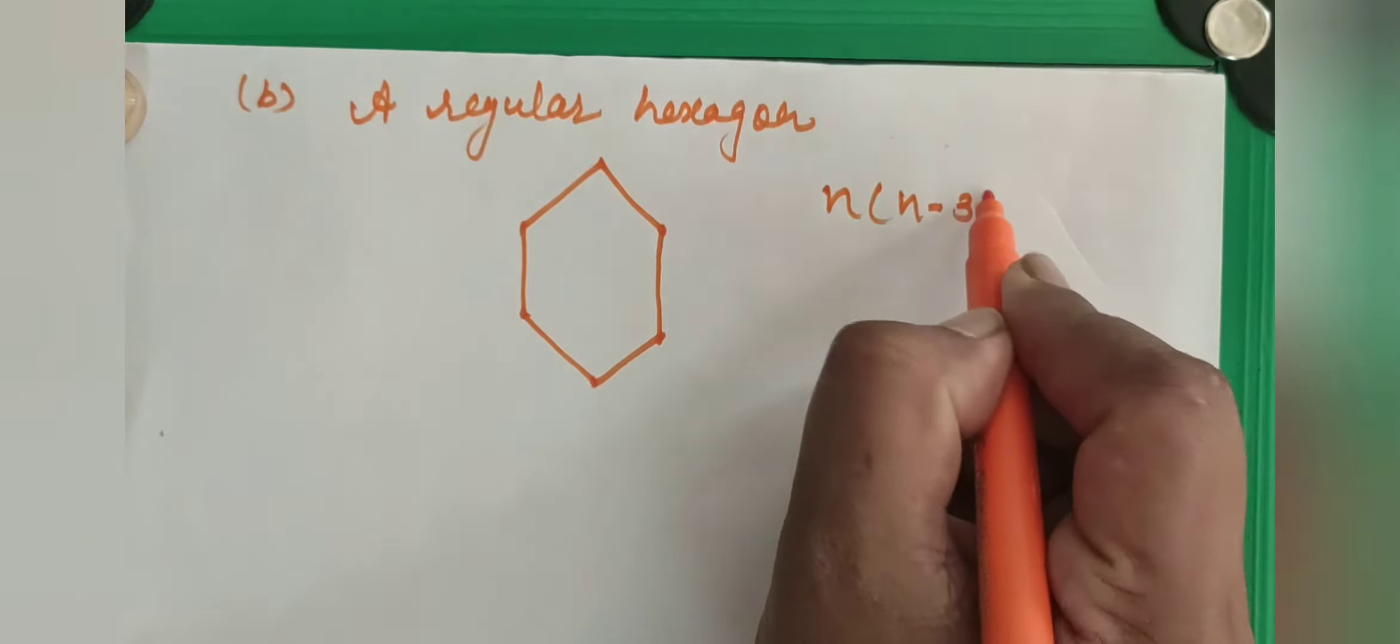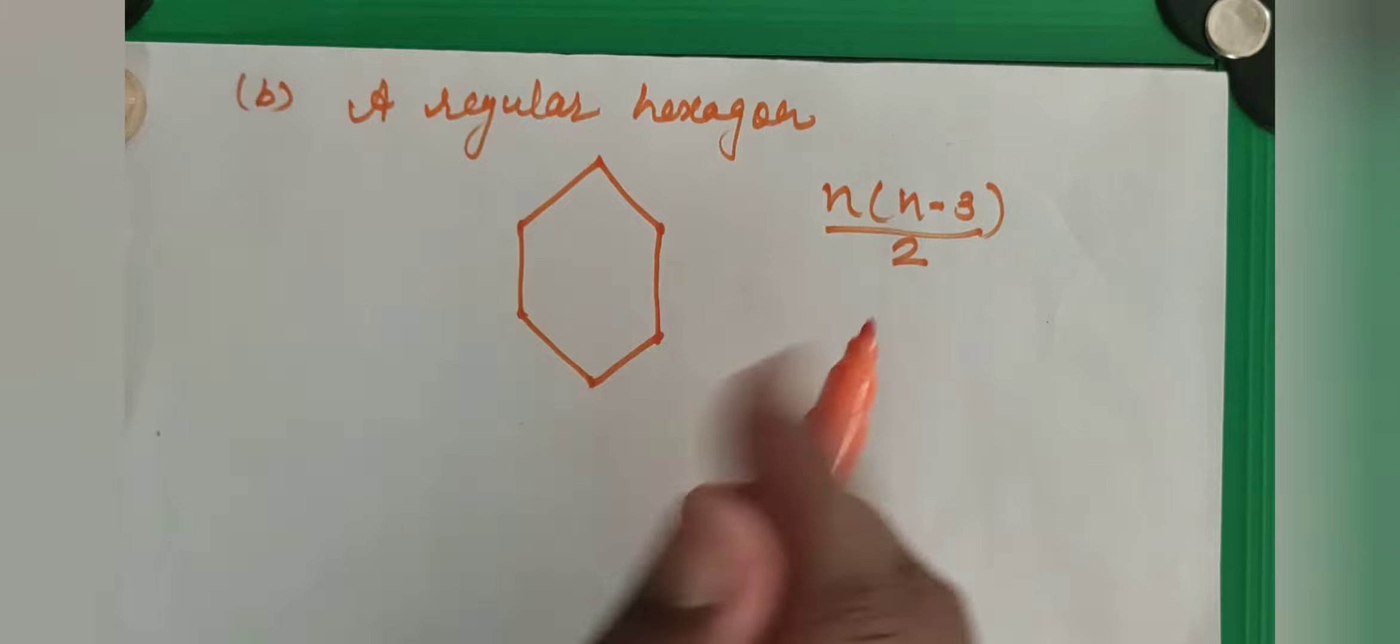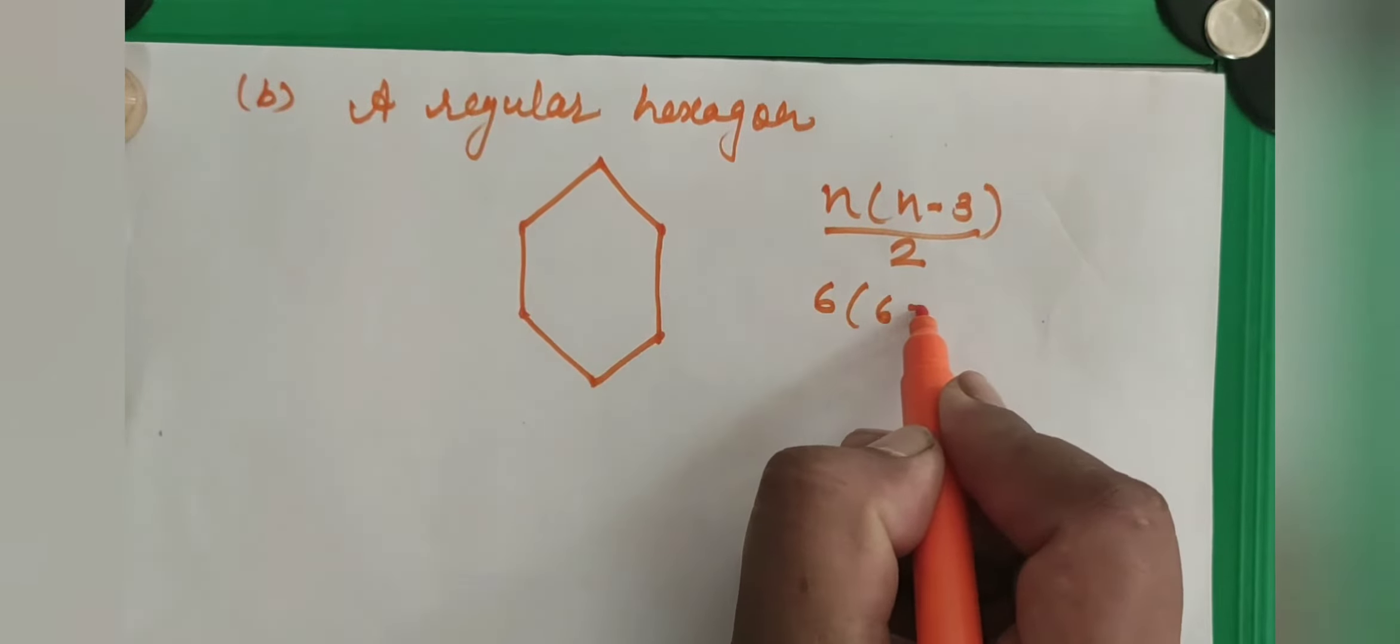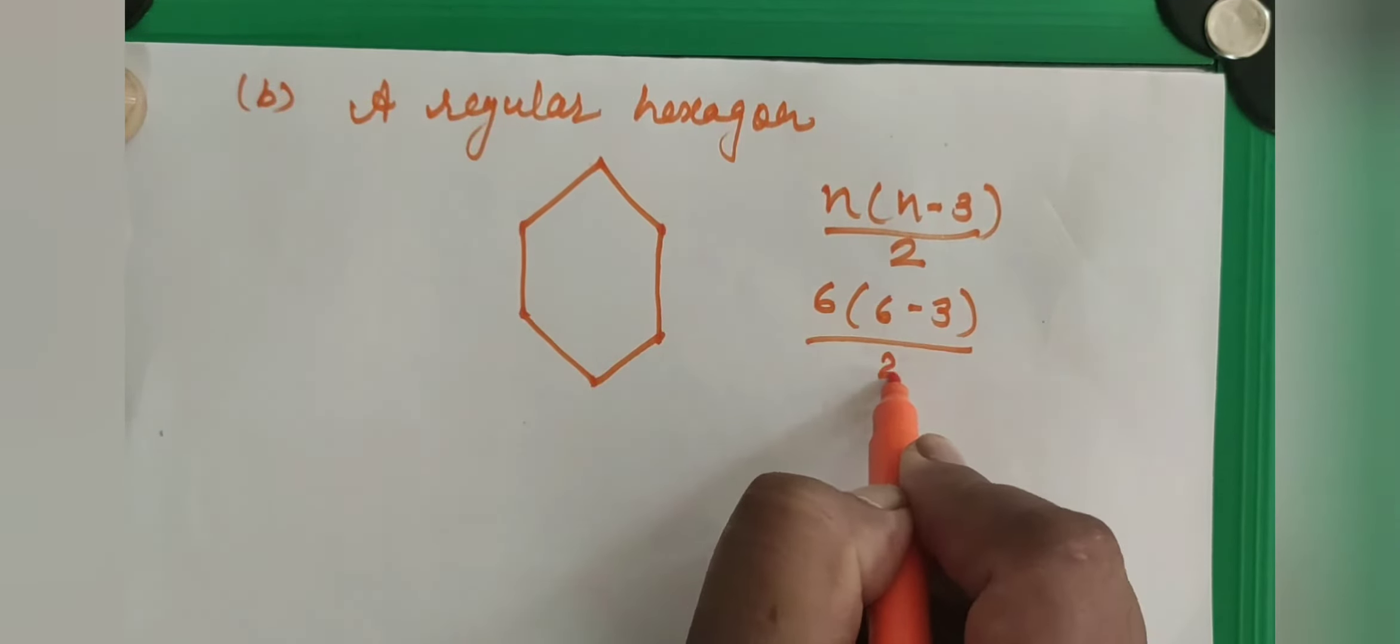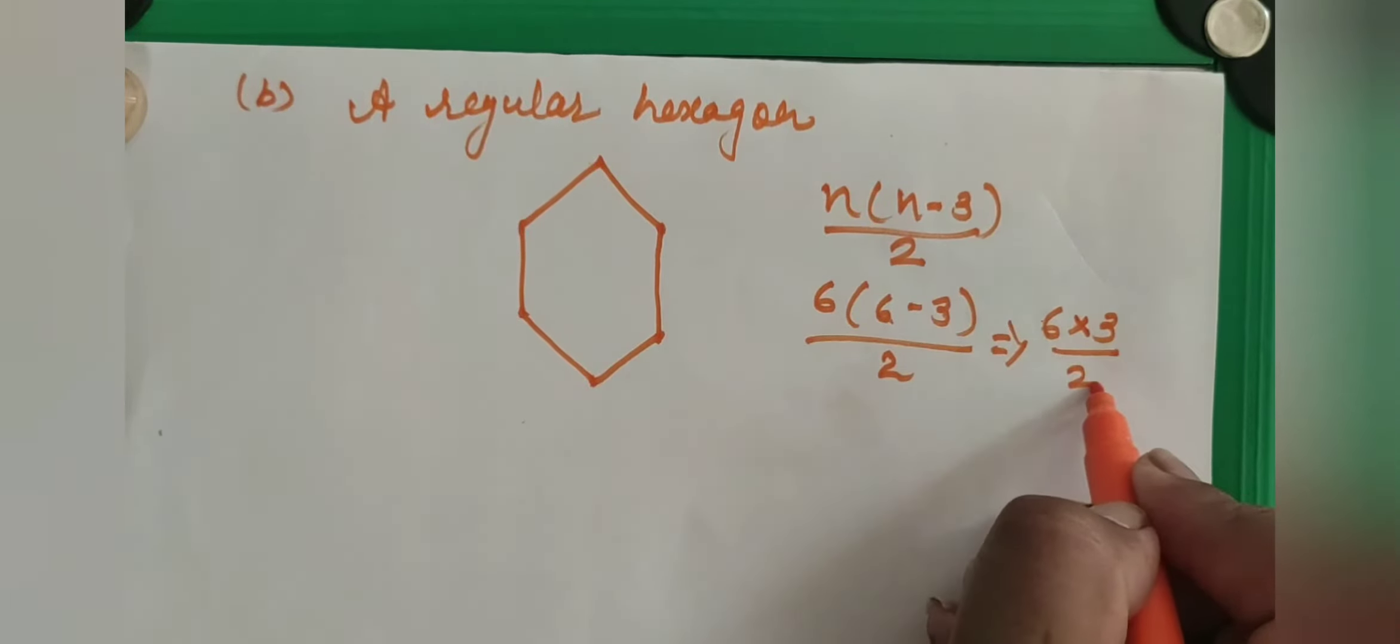n(n-3)/2. Number of sides are 6. 6(6-3)/2. So here we will get 6, 6 minus 3, 3 upon 2. Then you will get after the cancellation 9.